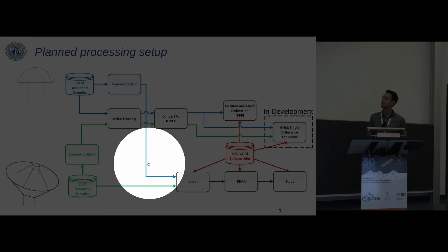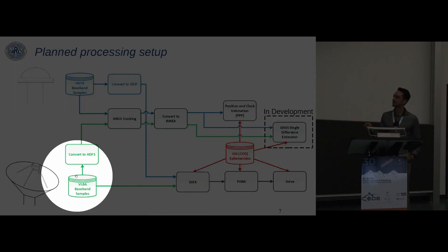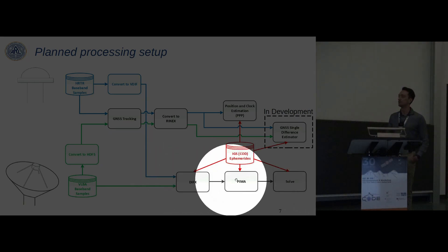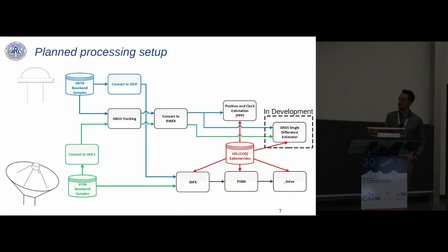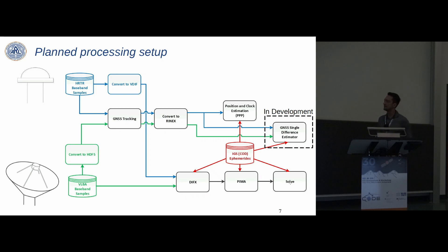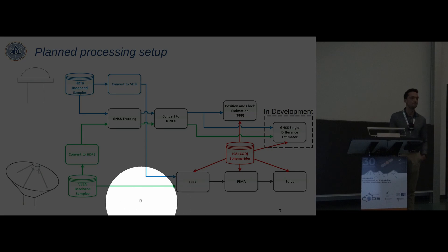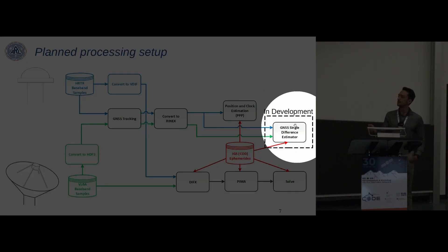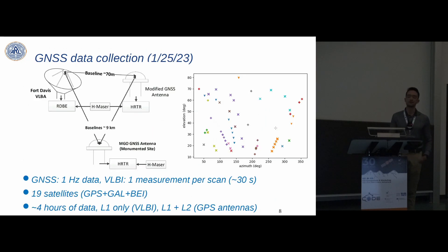Starting from the GNSS antenna, we get baseband samples, convert to VDIF format, and feed into our software correlator. We get samples from the radio telescope already in VDIF format. We then run interferometric processing through DiFX software correlator, PIMA fringe fitter, and SOLVE for least-squares parameter estimation. At each stage we use CODE precise ephemerides and an analytical model, and during parameter estimation we apply phase center offset and variation corrections from the IGS20 ANTEX file. We can also convert baseband samples back to HDF5, do software GNSS tracking to get pseudorange and carrier phase, convert to RINEX, and run a parallel GNSS analysis.